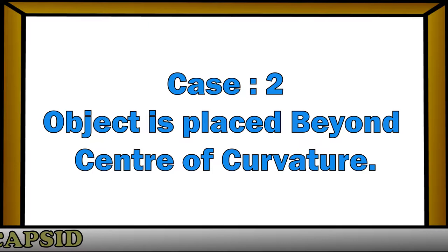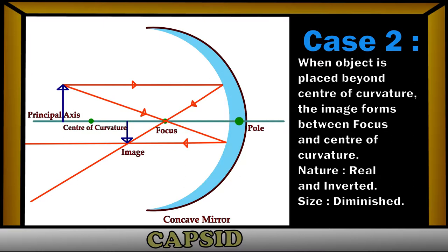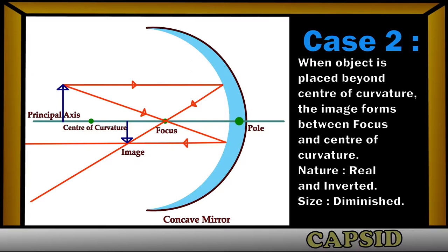Case 2: the object is placed beyond the center of curvature. When the object is placed beyond the center of curvature, the rays coming from the object meet between the focus and center of curvature after reflection through the concave mirror. So the image forms between the center of curvature and focus. The nature of the image will be real and inverted, and the size of the image will be diminished.